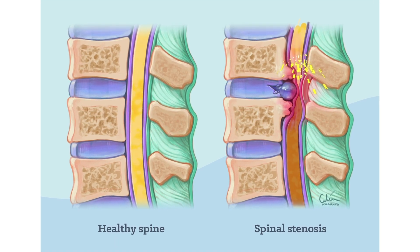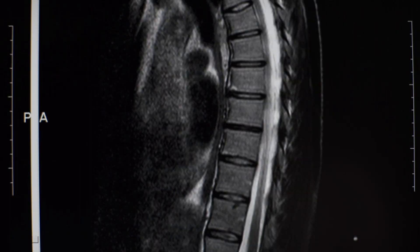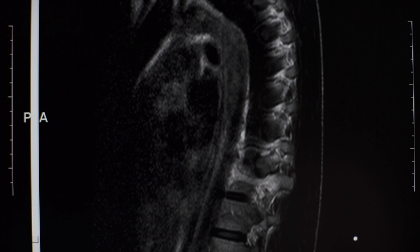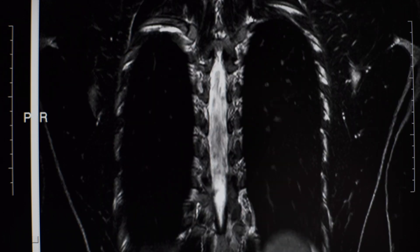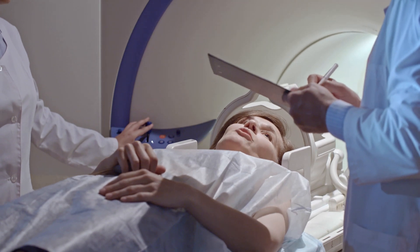The most common reason for being offered spinal surgery is when nerve compression has been identified in the spine, most often through an MRI scan. Alongside this, surgeons look for accompanying signs and symptoms associated with the area of the spine being compressed, and this can include pins and needles, numbness, or weakness in the legs.